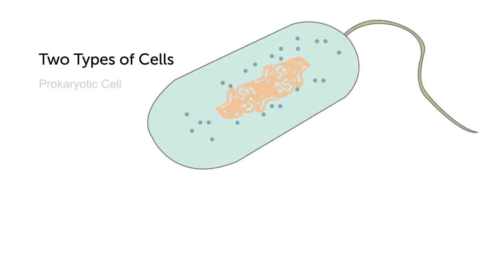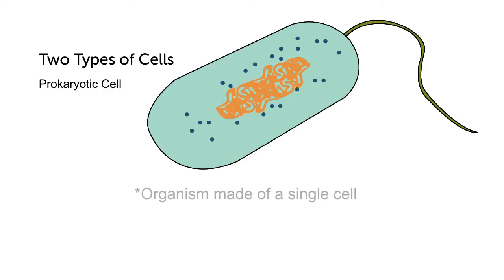There are also two types of cells. The most ancient and basic type of cellular organism is a prokaryotic cell. Prokaryotic cells are organisms that are made up of a single cell.